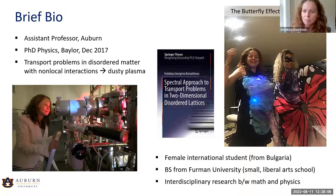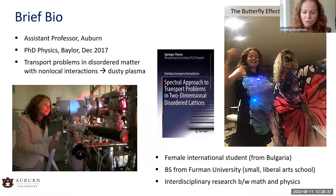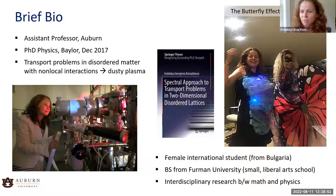A lot of my work is interdisciplinary between math and physics, which requires a lot of communication. Even to do my work, I had to learn how to communicate very sophisticated ideas to colleagues not from the same field — which was my first attempt at communication, and it had to be learned. I'm also a female international student — I came from Bulgaria, did my bachelor's at Furman University in Greenville, South Carolina — and there was that feeling of not being sure if I was right for science or would fit in.